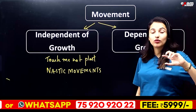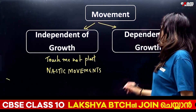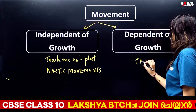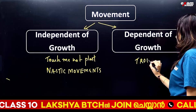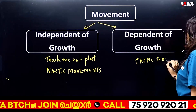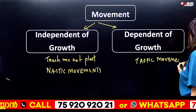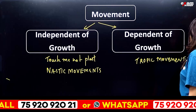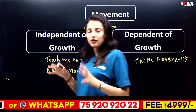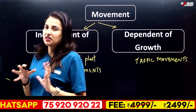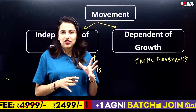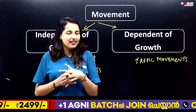Growth dependent movement — we call it tropic movements. So movements are divided into two: nastic movements and tropic movements. In tropic movements, we have the touch me not plant as an example of nastic.